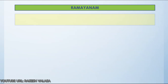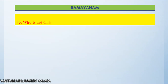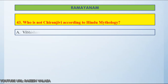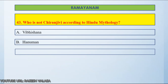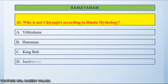Question number 43: Who is not Chiranjivi according to Hindu mythology? Option A, Vibishana. Option B, Hanuman. Option C, King Bali. Option D, Jambavanth. Let us count and start.